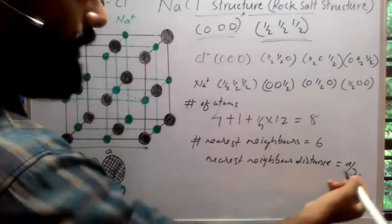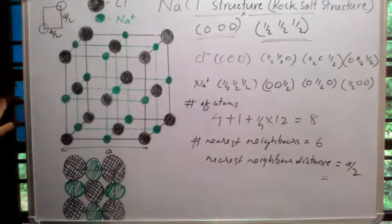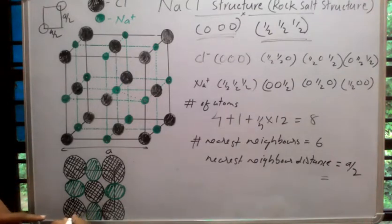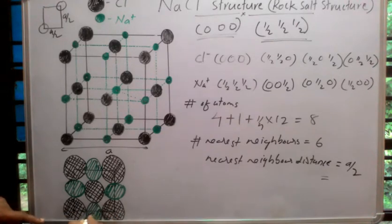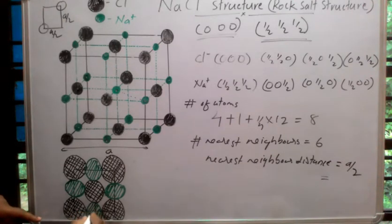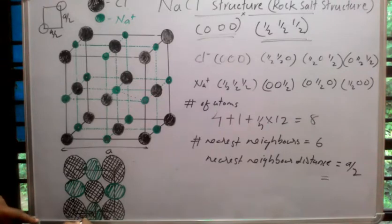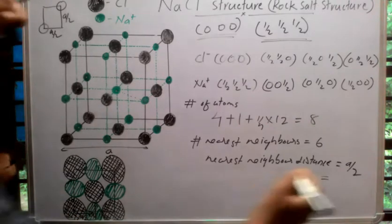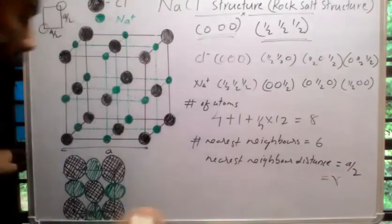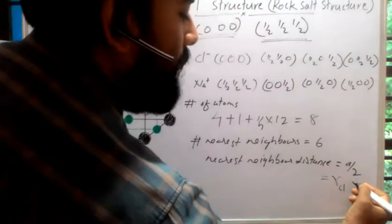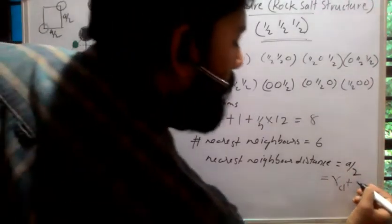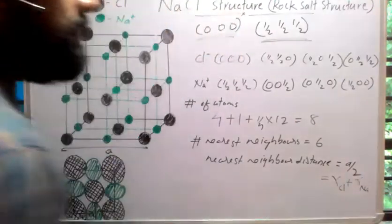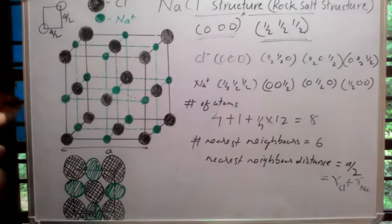The nearest neighbor distance a/2 corresponds to this distance 'a' between adjacent ions. So a/2 equals the radius of the chlorine atom plus the radius of the sodium atom — that is, r(Cl) + r(Na).